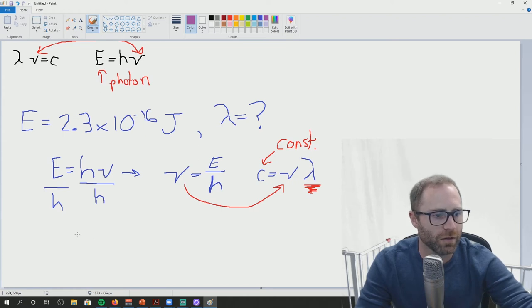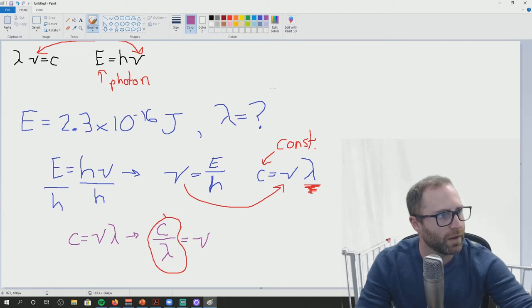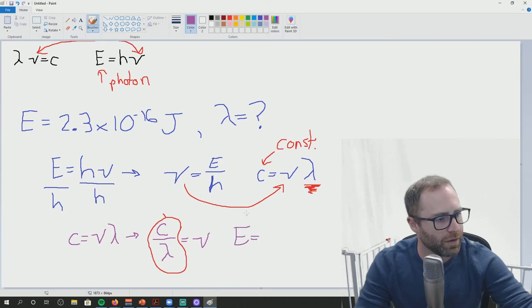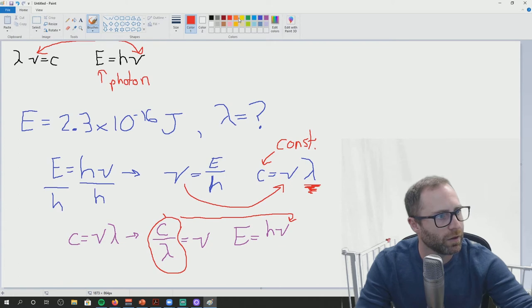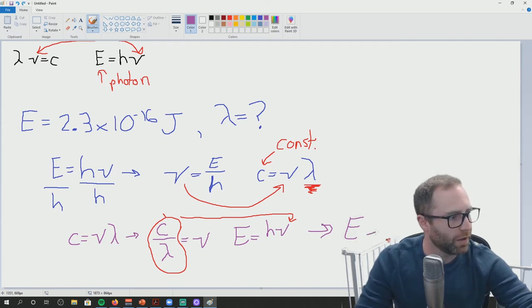We could do some substitution. So we could say C is equal to nu times lambda. We rearrange and we're going to get C divided by lambda equals nu. And then we could plug this stuff into our E equals H nu equation. So we get E equals H C over lambda.